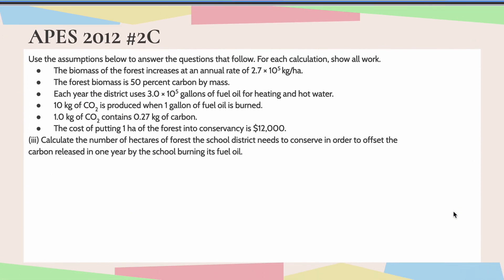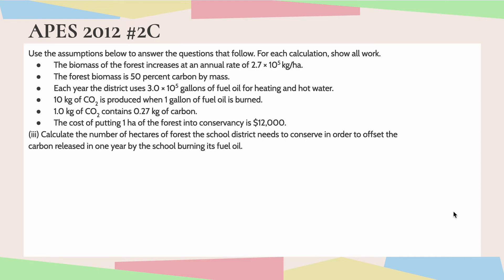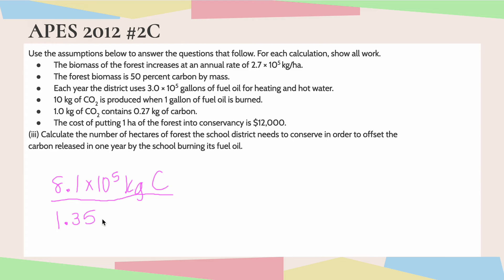Moving on to part three. This asks us to calculate the number of hectares of forest the school district needs to conserve in order to offset the carbon released by the school in a year. From part two, the school emits 8.1 times 10 to the fifth kilograms of carbon. From part one, each hectare of forest can absorb 1.35 times 10 to the fifth kilograms of carbon per hectare. Dividing those numbers gives us 6 hectares.